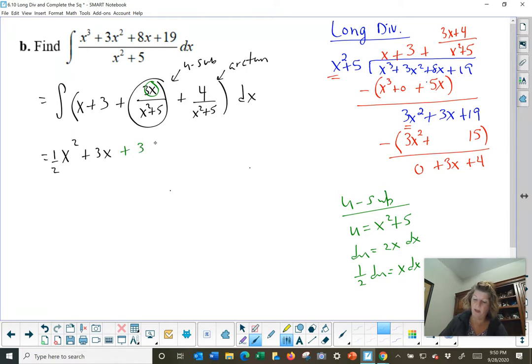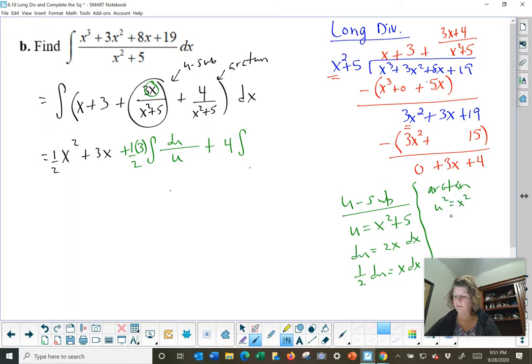So this becomes, let's just keep it in green. I can bring the 3 out front. The x gets replaced with 1 half du. 1 half du replaces the x dx. On the bottom, x squared plus 5 is my u plus 4 out front integral, my arc tan stuff. Will you be able to follow this work? My arc tan. The u squared is x squared, so u is x. That means du is dx. Okay, nice and clean. And then my a is root 5. That should be good enough now. I can play off of that.